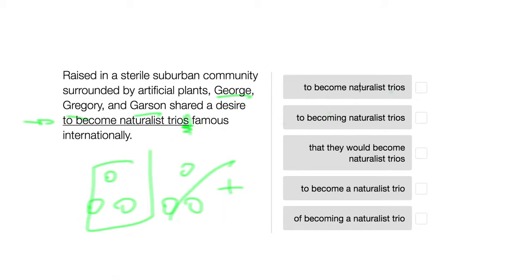So any answer choice that has trio in the plural can't be a potential answer choice. So this first one, to become naturalist trios, doesn't make sense. The second one, the third. And then these last two options, to become a naturalist trio and of becoming a naturalist trio, are what we are dealing with.